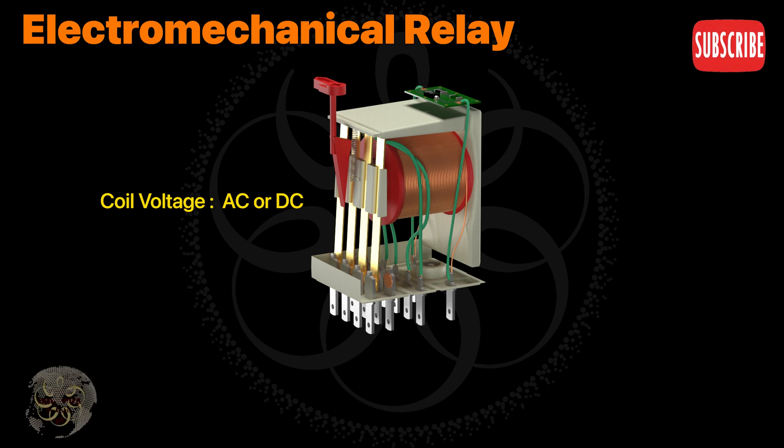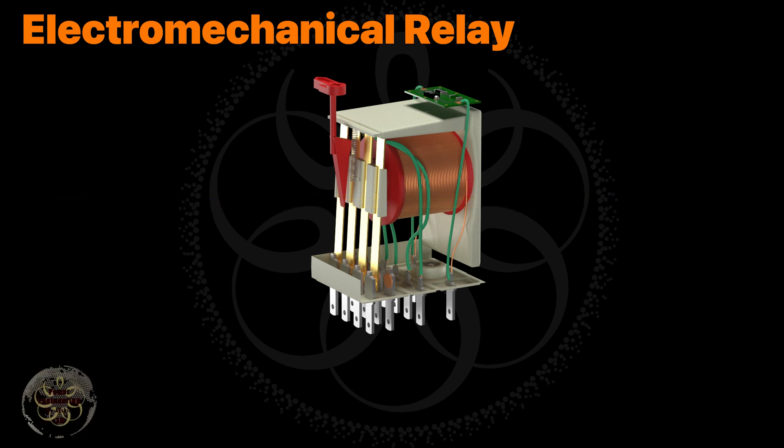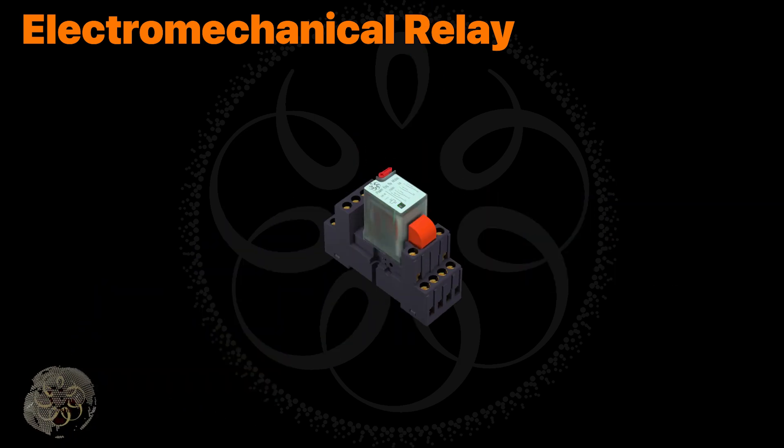AC relays often include a shaded ring to stabilize the magnetic field. Do you know why this ring is used? Share your thoughts with us. In DC relays, a freewheeling diode is commonly added to the coil.